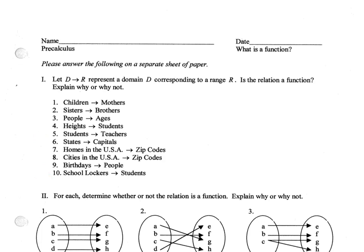Each of these represents a certain relation. We are going to determine whether or not they are a function. With number one, children to mothers, this one is actually a little ambiguous. But if we assume that they are talking about biological mothers, then this would be yes, because each child would have one and only one biological mother.